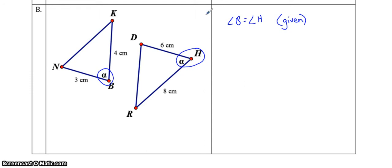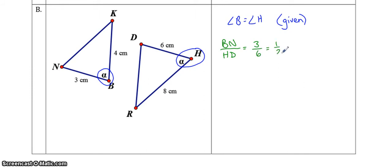Now let's examine the sides. If you look at the shortest side of this triangle, BN, it's going to correspond with the shortest side of this triangle. You just need to make sure you get the order of the letters correct. If we said BN, we're starting at the vertex that had the angle, and going to the other vertex. So BN will correspond to HD, because it starts where the angle is. That is going to be equal to 3 over 6, which is one-half in lowest terms.